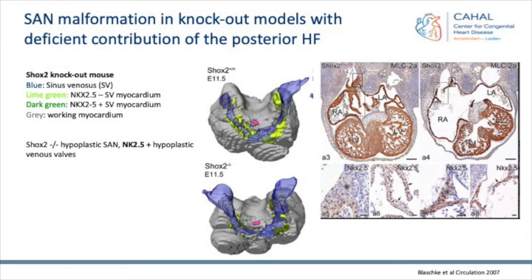The sinus node formation is influenced by Shox2, which is a transcription factor. In a Shox2 knockout model, comparing to the wild type, you can see in the Shox2 mouse that the sinus venosus becomes NKX2.5-positive. That results in an underdeveloped sinus node, a hypoplastic sinus node, and hypoplastic sinus venosus.